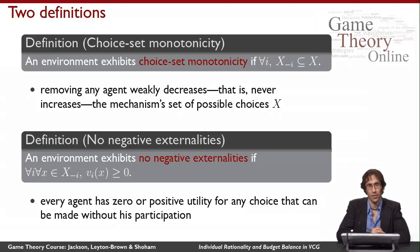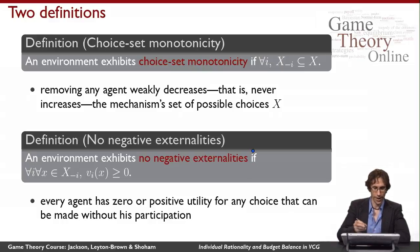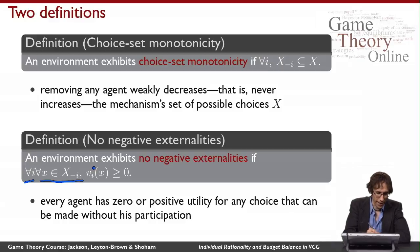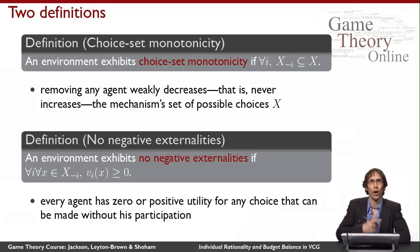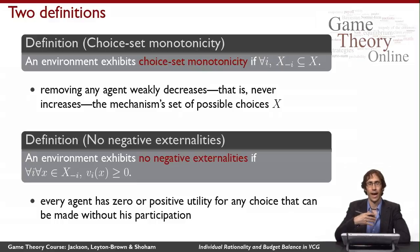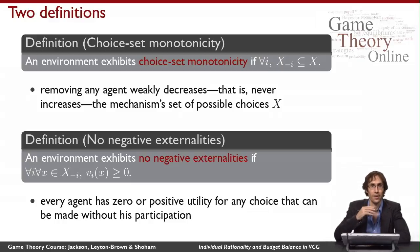The second assumption is called no negative externalities. We have no negative externalities if for all agents and all choices that can be made without that agent, the agent's own valuation for each of these choices is non-negative. When you get dropped from the mechanism, it isn't possible for the mechanism to choose something that actually causes you pain. It might choose something you like less, but it can't choose something for which you have negative utility.